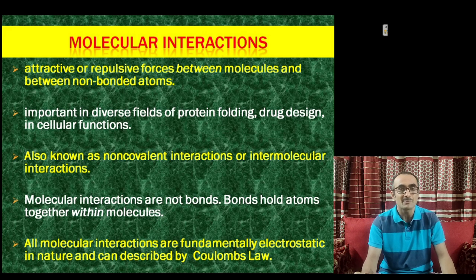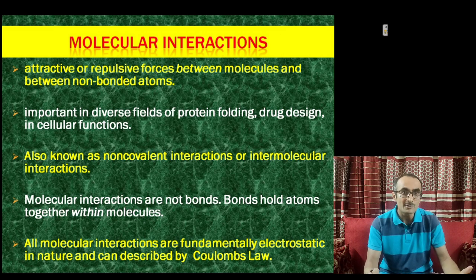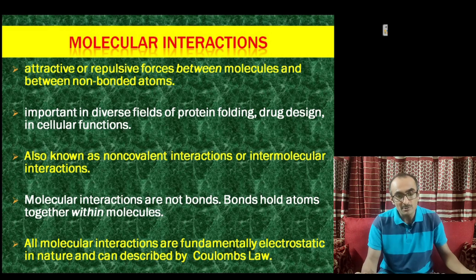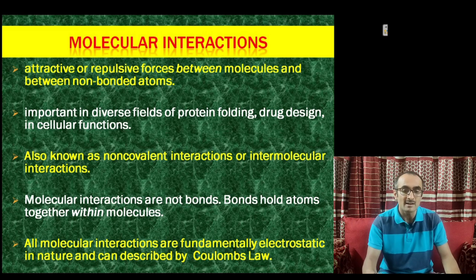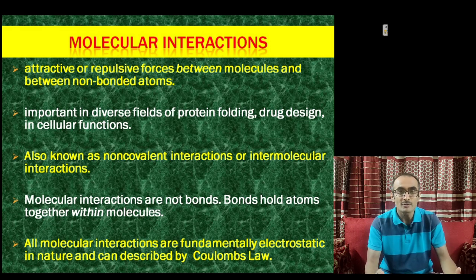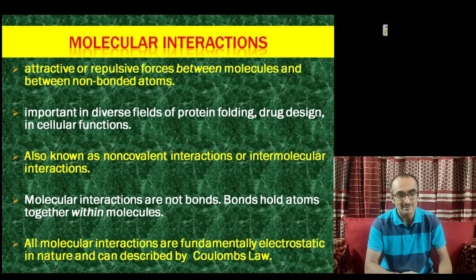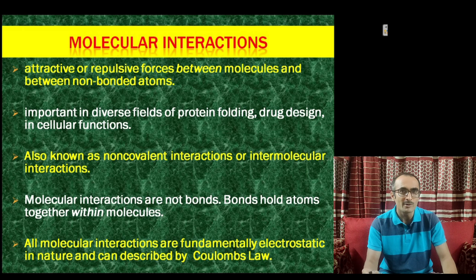Similarly, ionic interaction belongs to the same category. Even when you do denaturation of double-stranded DNA, both strands of the DNA molecule are separated. In that case also, you only break hydrogen bonds, which are non-covalent interactions between the two strands of DNA. These molecular interactions are very important in diverse areas — in protein folding, a protein folds into a globular shape in solution because of these non-covalent interactions. Even in drug design, a drug compound binds to its receptor through these non-covalent interactions, and different cellular functions like DNA binding, protein-protein interactions, most of them fall into this category of non-covalent and weak molecular interactions.